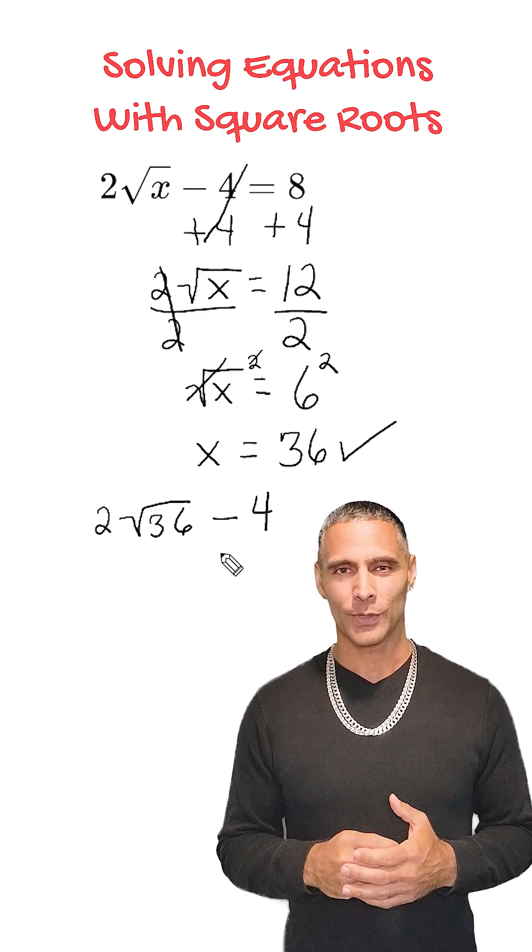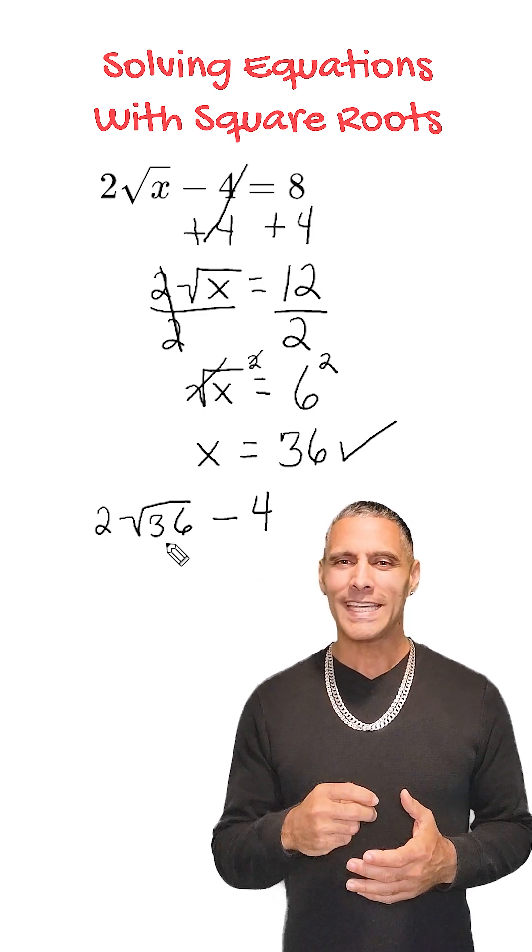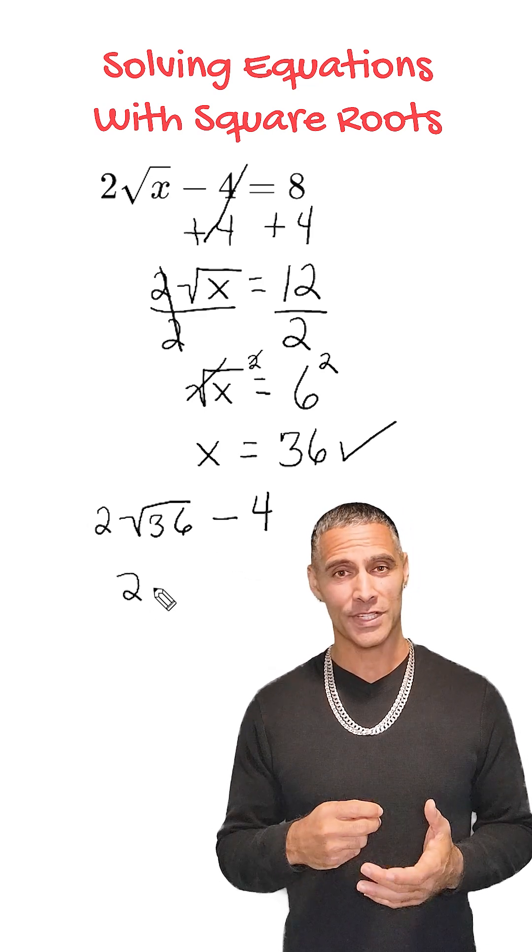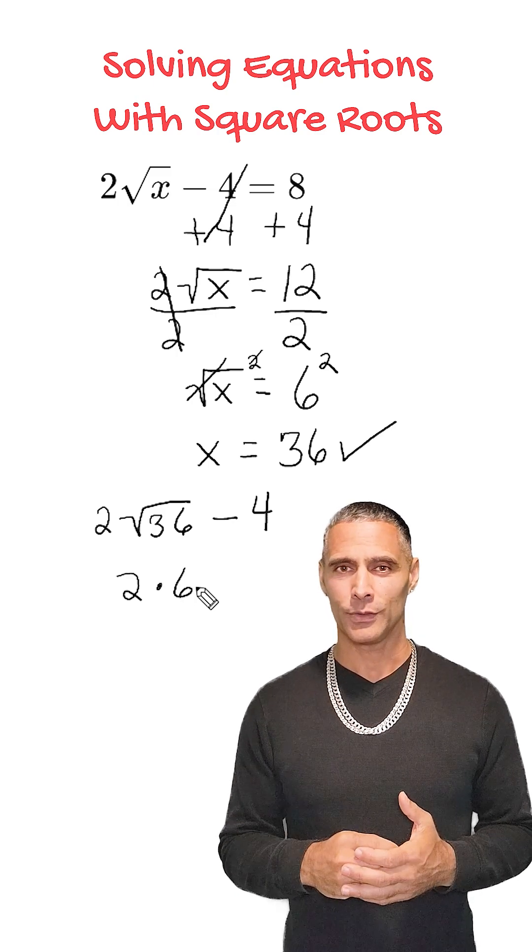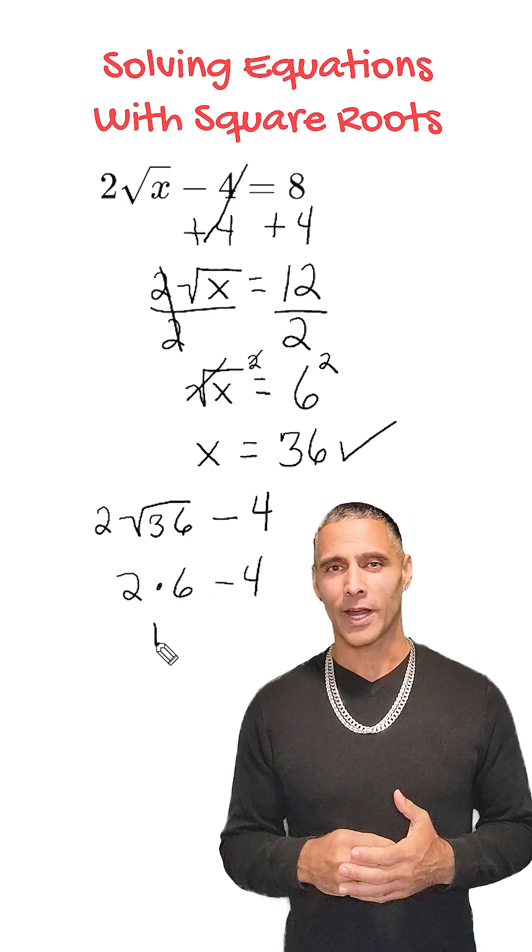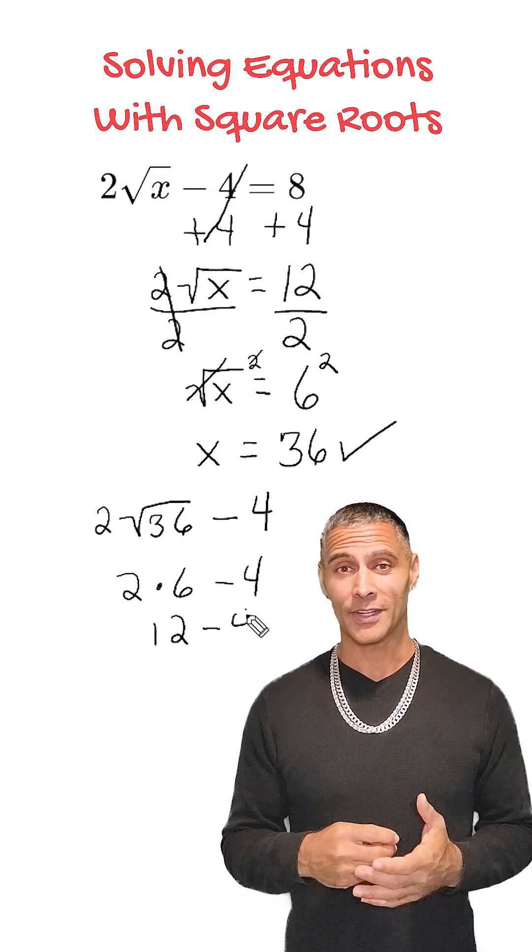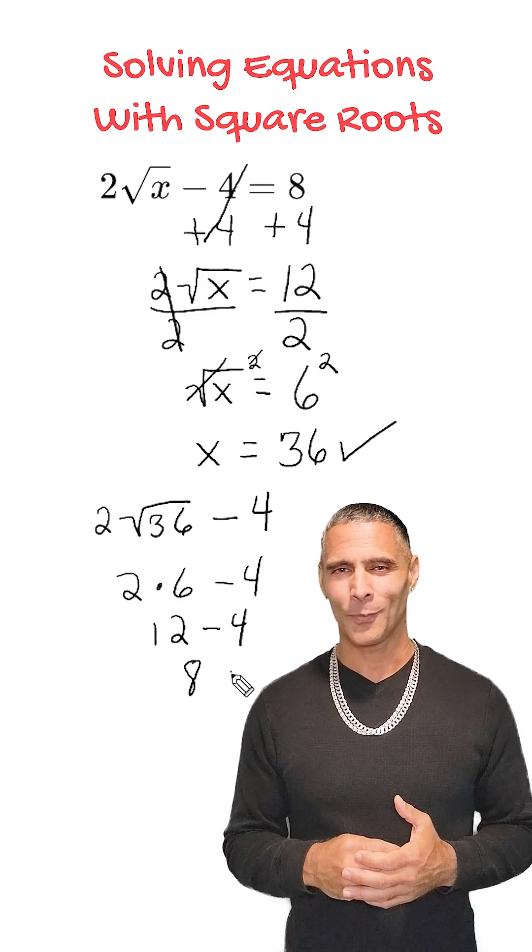After substituting 36 in for x, we take the square root of 36, which is 6, and multiply by 2, which is 12. And subtracting 4 from 12 does equal 8, proving we came up with the correct solution.